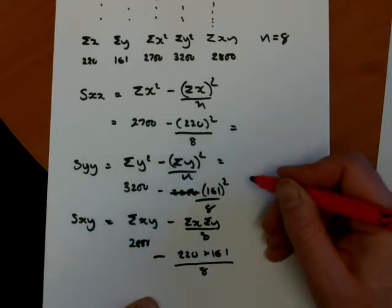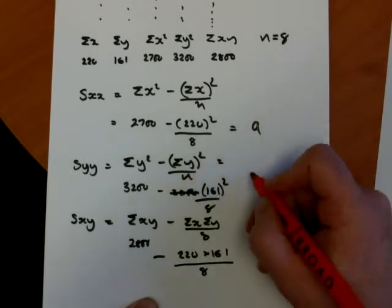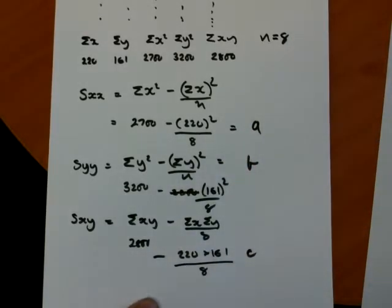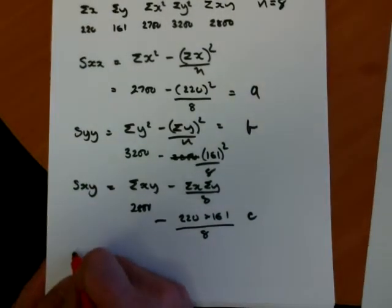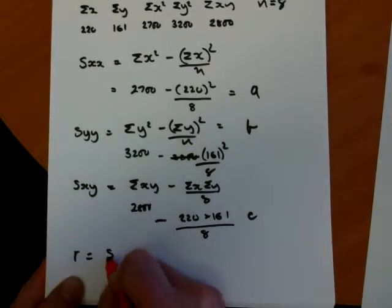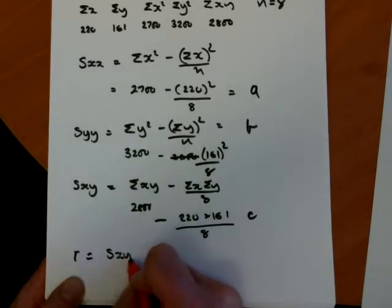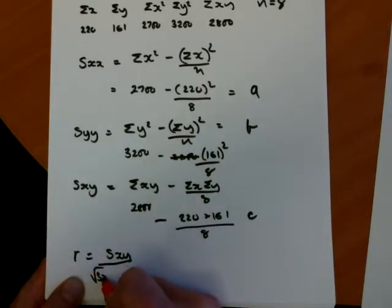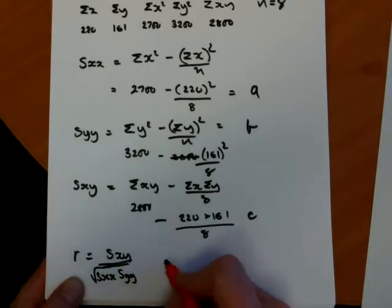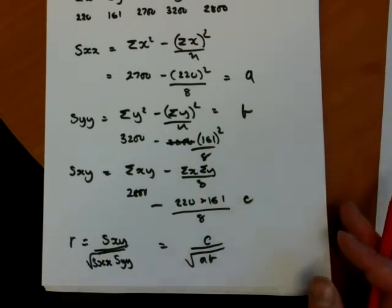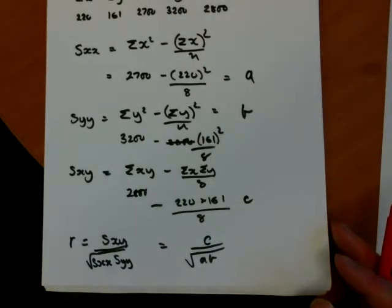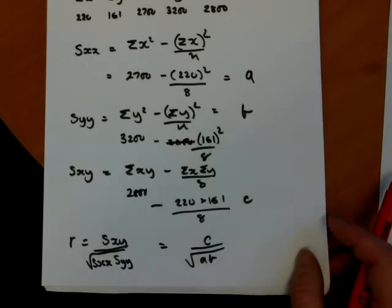So when we have all these particular parts, I'm just going to call them a, b, and c. You can work them out with a calculator. I have to carefully then put them into the product correlation coefficient. So remember that r equals sxy over the square root of sxx times syy. So in terms of what I've written then, it would be c over the square root of a times b, when I've worked out the values of a, b, and c. And that is how you calculate the product moment correlation coefficient.